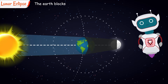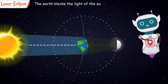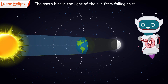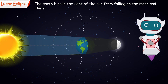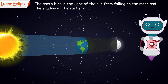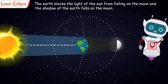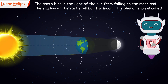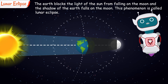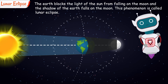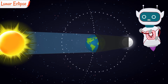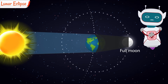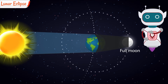The Earth blocks the light of the Sun from falling on the Moon, and the shadow of the Earth falls on the Moon. This phenomenon is called a Lunar Eclipse.